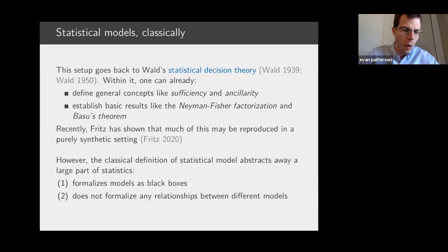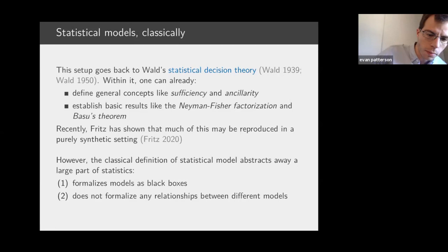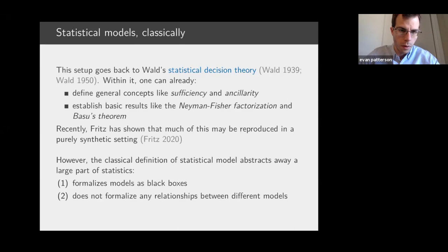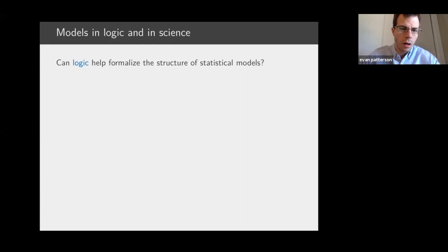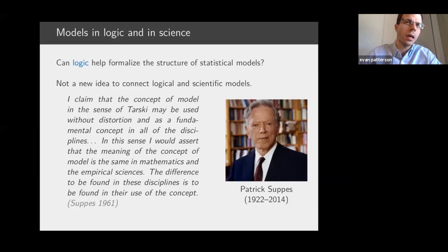Nevertheless, this classical definition of statistics is abstracting away from a lot of essential things. By the way this family of probability distributions is defined as having no further structure, it's essentially treating the model as a black box. Moreover, it doesn't really provide any guidance on how one might formalize relationships between different models. So if we'd like to do those things, it's natural to ask whether logic can help in formalizing the structure — and that's certainly not a new idea in the context of scientific and statistical models.